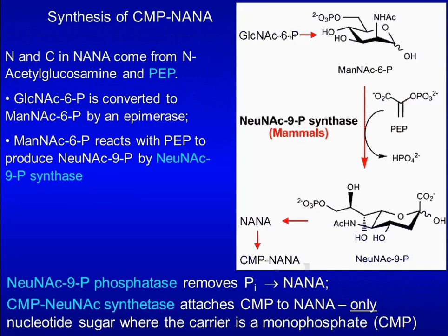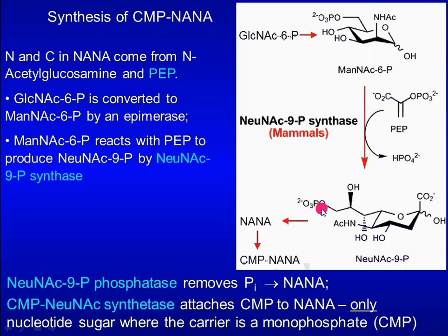Nitrogen and carbon atoms in NANA come from N-acetylglucosamine-6-phosphate and phosphoenolpyruvate. N-acetylglucosamine-6-phosphate is converted to N-acetylmannosamine-6-phosphate by an epimerase. This reacts with PEP to produce N-acetylneuraminic acid-9-phosphate by a synthase. The phosphate group is removed by a phosphatase, giving rise to NANA. CMP-N-acetylneuraminic acid synthetase attaches CMP to NANA, giving rise to CMP-NANA.